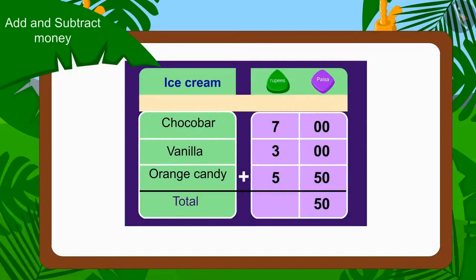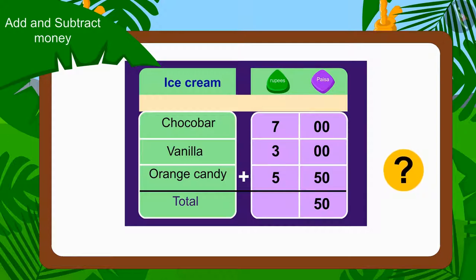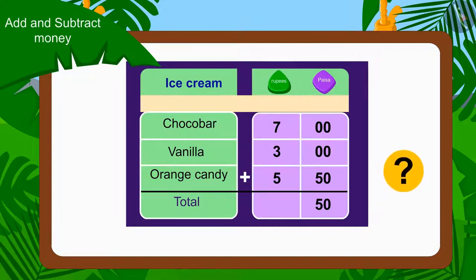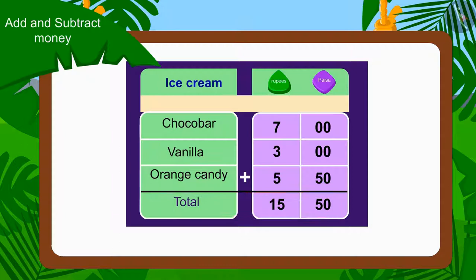Now we will add the amount of paise first. Can you tell the total amount of paise? Right, 50 paise. Then we will add all the rupees. What is the total amount? Yes, 15 rupees. In this way, Raju and Bablu will have to pay 15 rupees 50 paise to Babban.